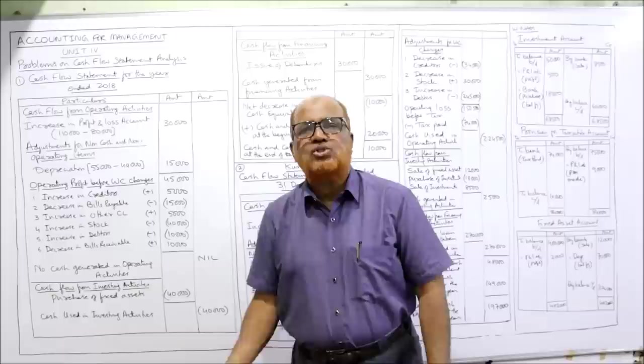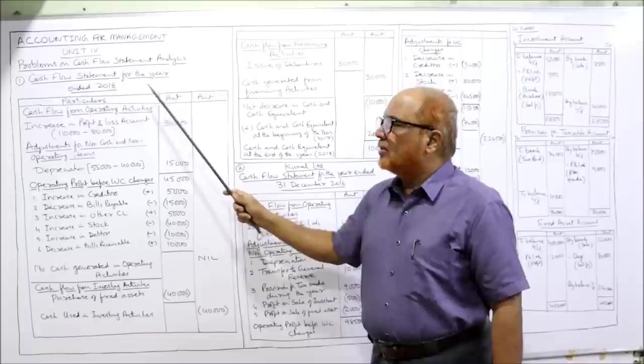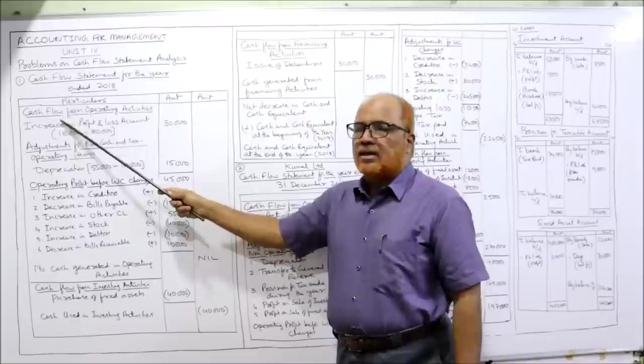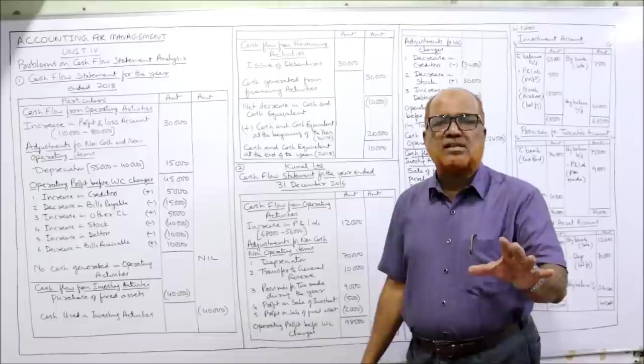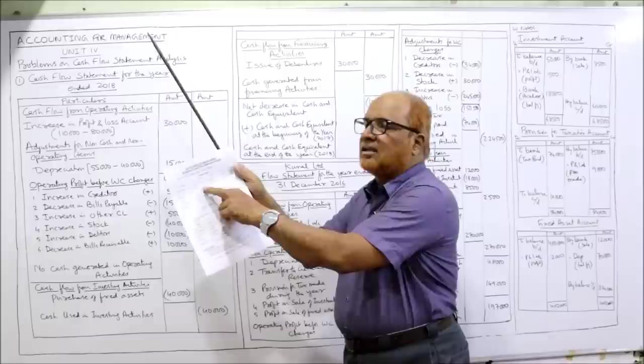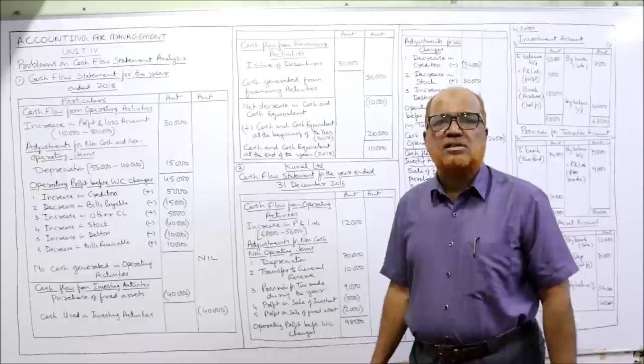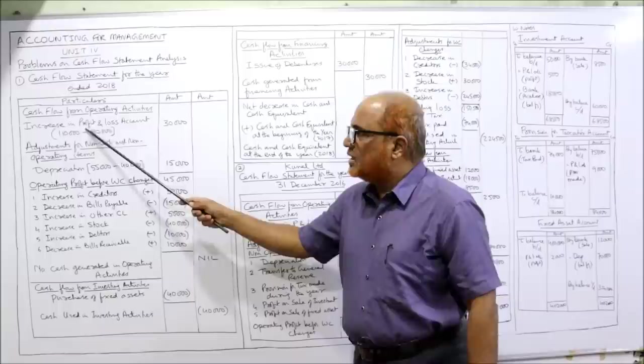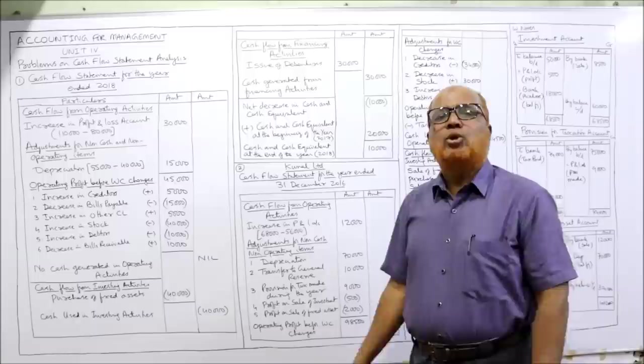Cash flow statement for the year ended 2018. Particulars with two amount columns — inner column for calculations and outer column for final figures. Cash flow from operating activities: first, increase in profit and loss account. Last year P&L was 80,000, current year 1,10,000, so increase is 30,000. That is 1,10,000 minus 80,000. To this we have to adjust non-cash and non-operating items.